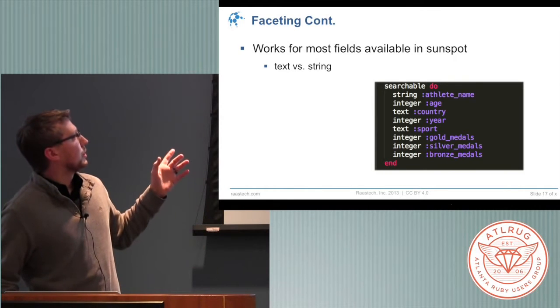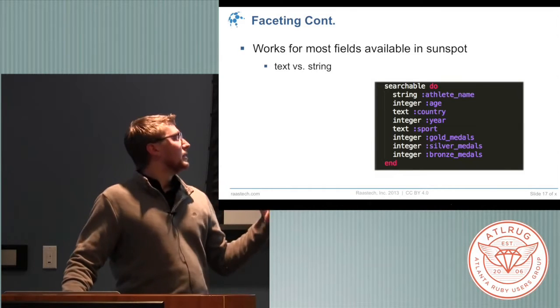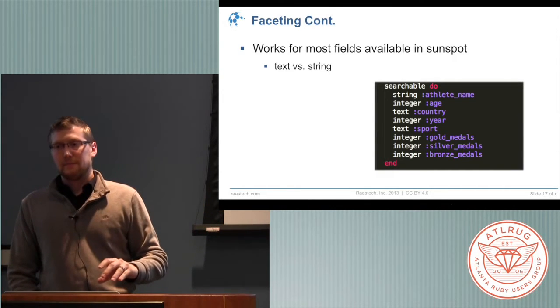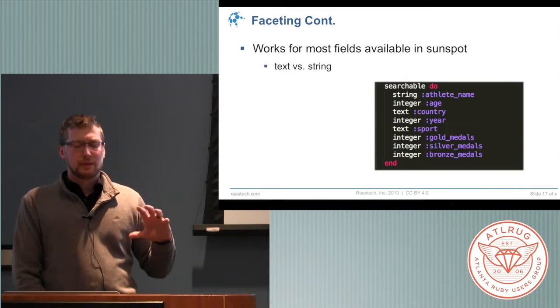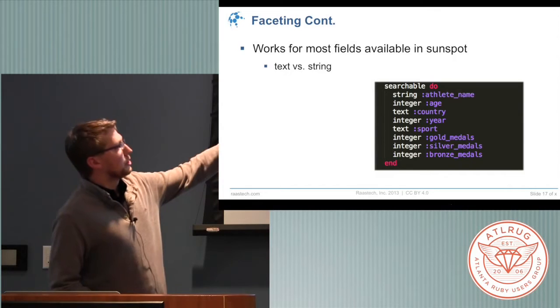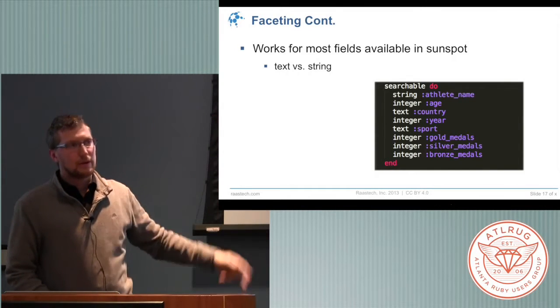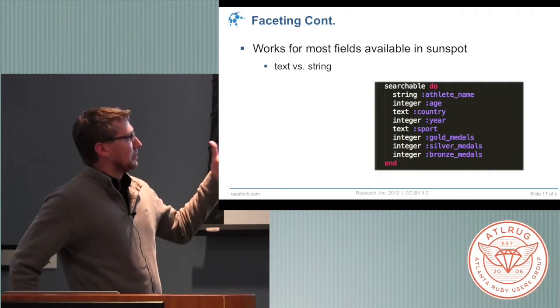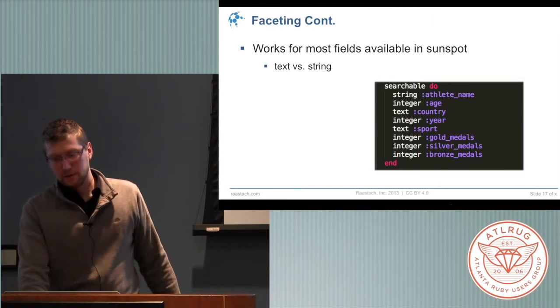As I was talking about before, faceting only works for certain types. If you looked before, the athlete name was actually considered text, and that's something that's searchable, but it's not something that they'll allow you to do facets on. Now, that's not to say that in Solr itself you won't be able to do certain things, but there's what's called a multi-value item, and those cannot be faceted on. If you actually want to have something that's both searchable in full text but as well as facetable, you can actually mention them twice. There may be a better way of doing that, but as I said, I'm not an expert in this. It's only been about two months. It's something that's worth mentioning.